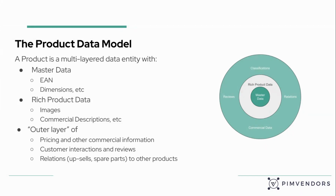Centered in this whole thing is the product data model. The product data model is basically your product information management structure — your product data structure. It's a multi-layered data entity. That means it has a core — the master data — and those are the most boring details of your product, but also maybe the most important ones. So your barcodes or product numbers, your EAN, dimensions, weights, et cetera.